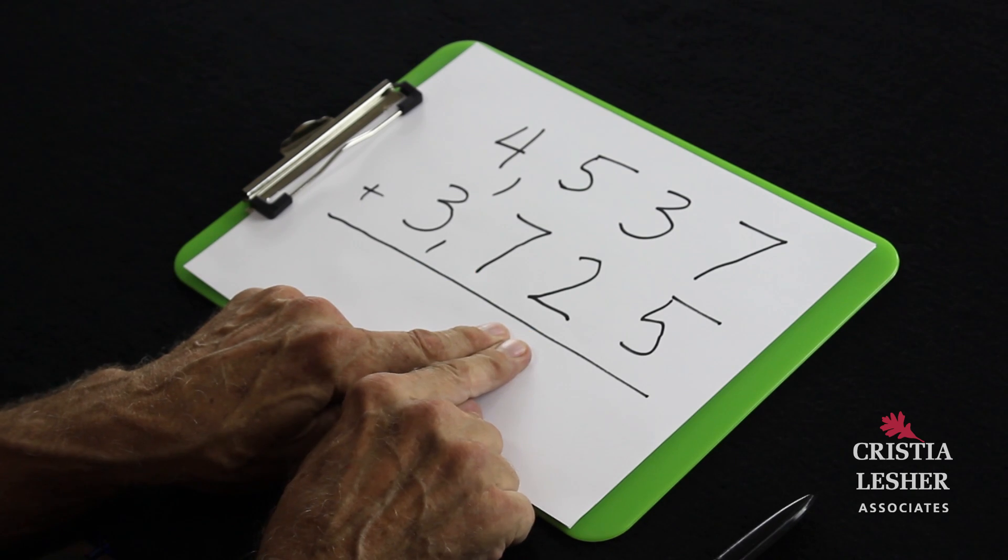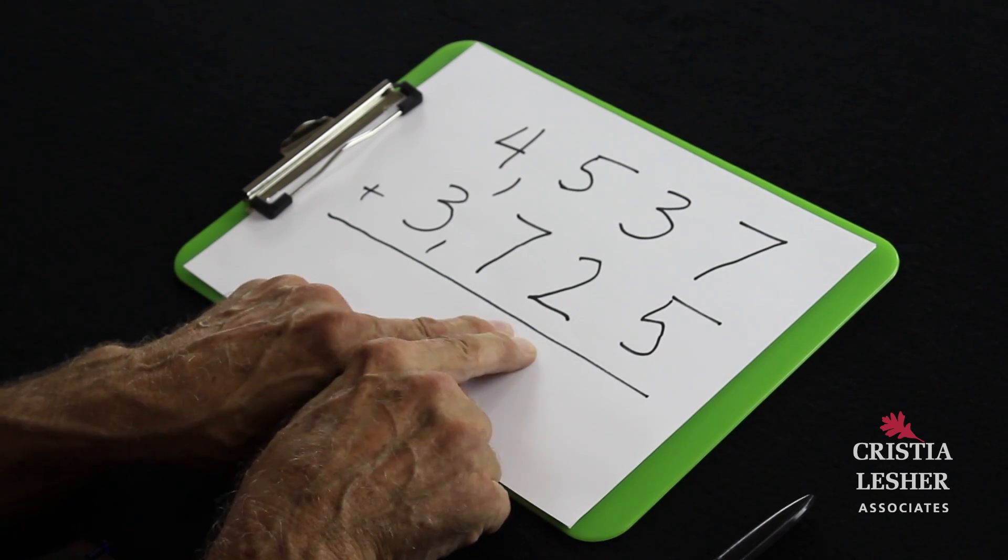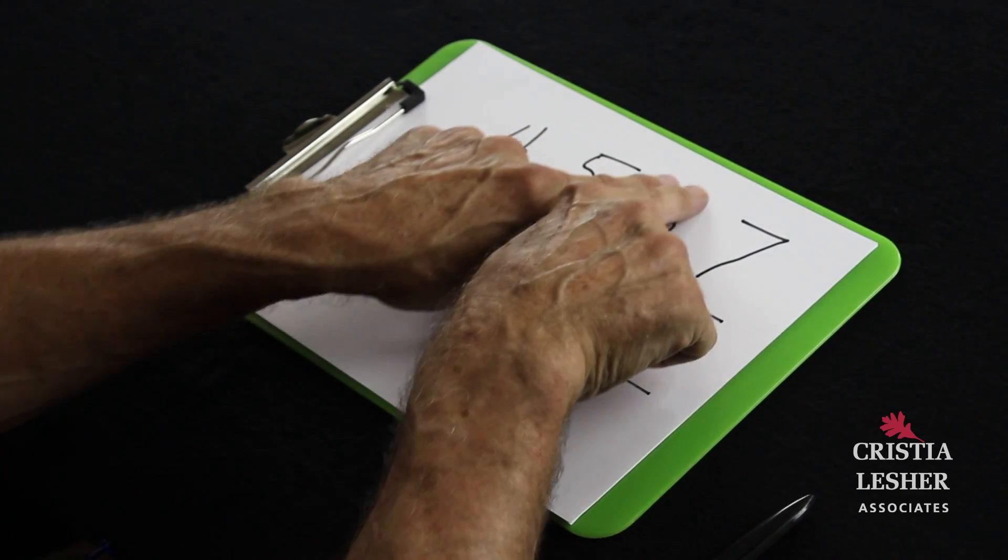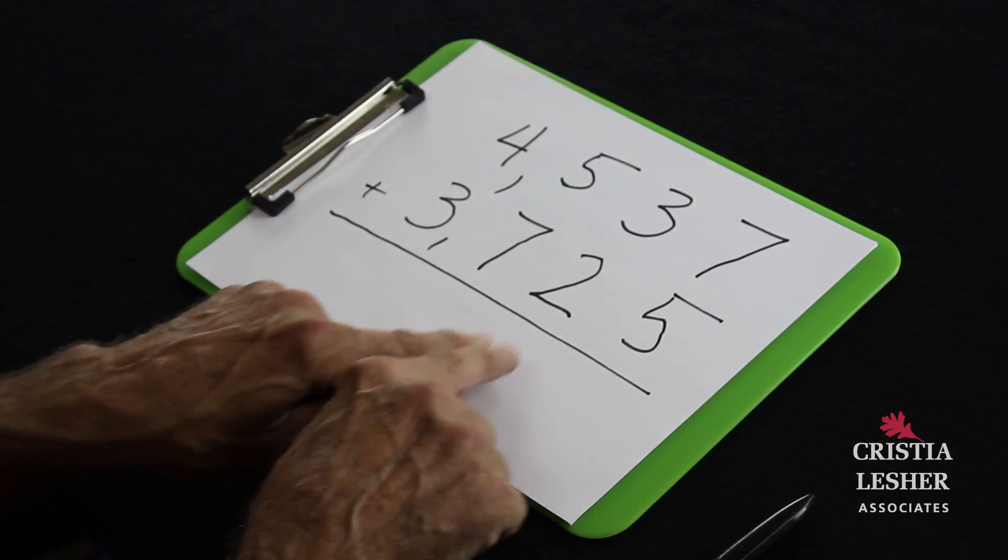When I add up my hundreds, before I write it down I'm going to check my tens column to see if I have any hidden hundreds. And before I write down my tens number, I'm going to check my ones column to see if it has any hidden tens.